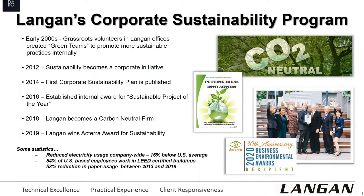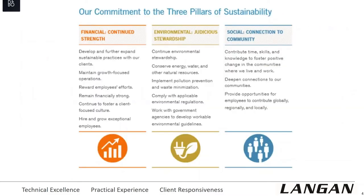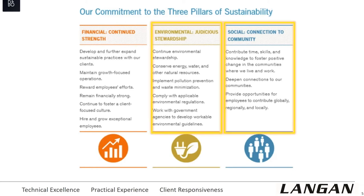Since then, Langen has grown active green teams in 100% of its US offices, published its own corporate sustainability plan, and established a firm-wide award recognizing projects that go above and beyond in sustainability. They've reduced electricity usage company-wide about 16% below the US average. About 54% of US-based employees worked in LEED-certified buildings, and in 2018 and 2019, they achieved a zero net carbon footprint — making them a carbon neutral firm. Langen's sustainability team wanted to capitalize on ArcGIS Insights as an analytics workbench to measure past, present, and future sustainability metrics in one single location.